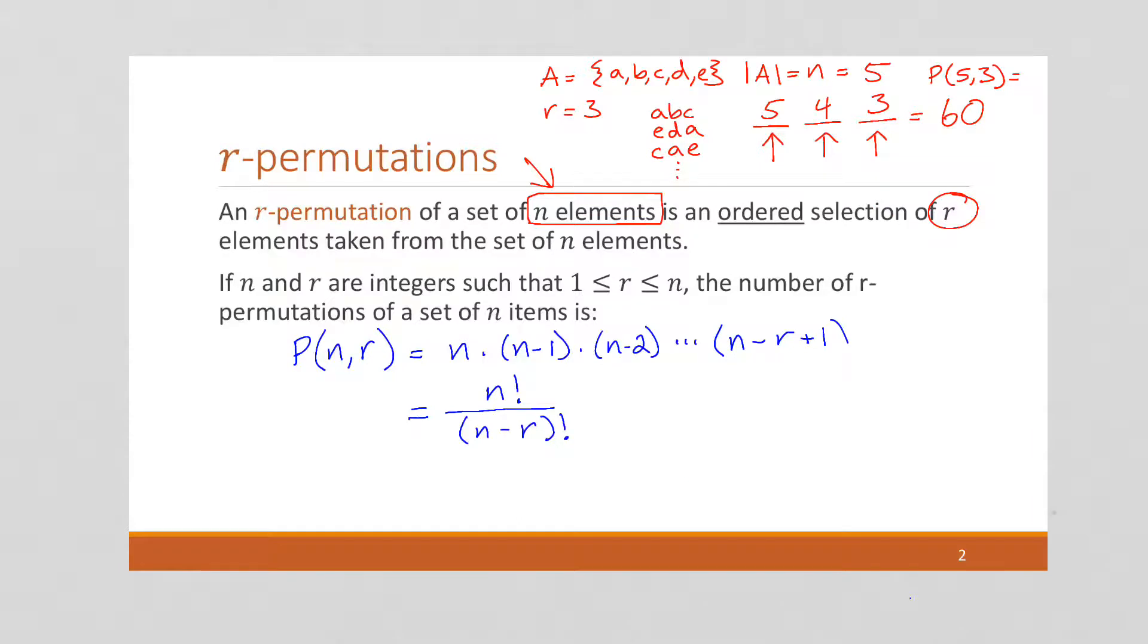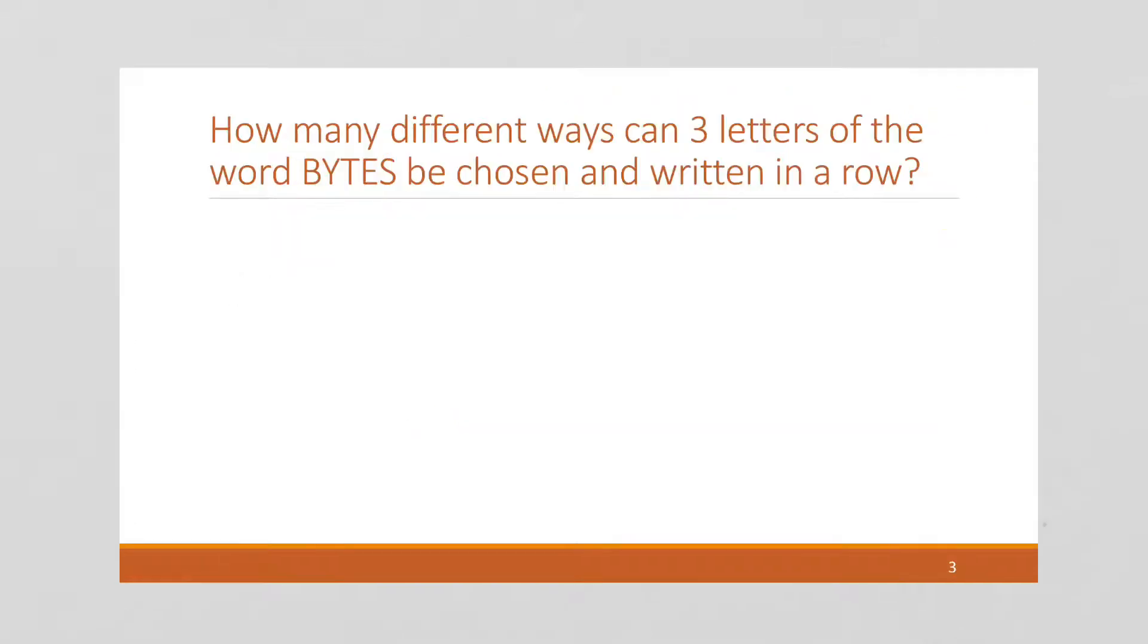So this is our formula for permutations, the number of permutations. So just like we had our example with the number of permutations of the word computer, now we're going to look at the word BYTES and see how many ways can we choose 3 letters of those and write them in a row.